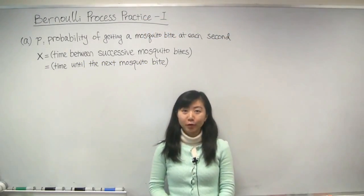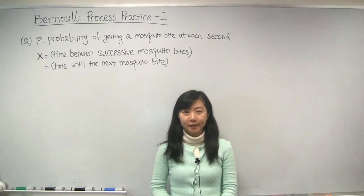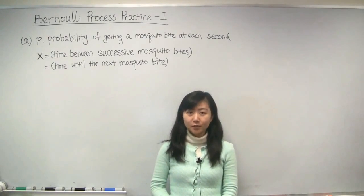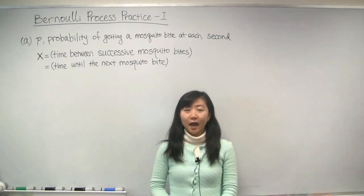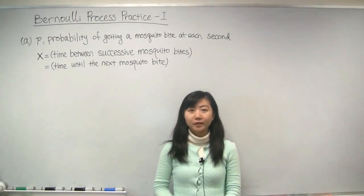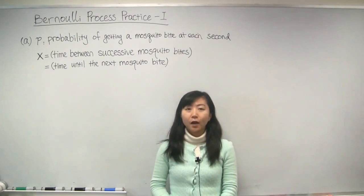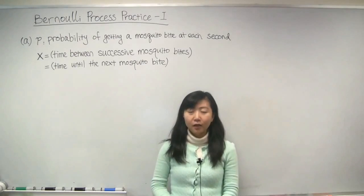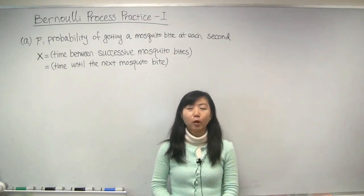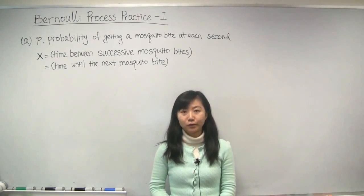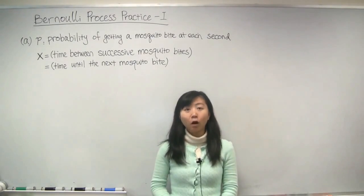In this problem, you are visiting the rainforest, but unfortunately you have run out of insect repellent. As a result, the probability of you getting mosquito bites is really high. At each second, the probability that a mosquito will land on your neck is 0.5. If a mosquito lands on your neck, the probability that it will bite you is 0.2, and the probability that it will never bother you is 0.8. All this happens independently among all mosquitoes.